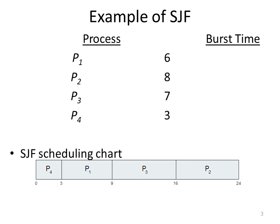If you find out the waiting time for all four processes: for P1 it is 3 ms, for P2 it is 16 ms, for P3 it is 9 ms, and for P4 it is 0 ms. The average waiting time of all four processes comes to be 7 ms.